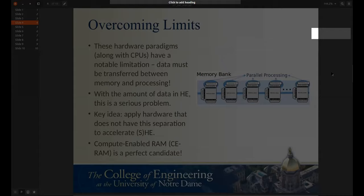All of these hardware paradigms that we mentioned, along with CPUs, have a common weakness: they have an inherent separation between memory and processing. For example, in an ordinary memory hierarchy, there's a separation of where data is stored in RAM or cache and where it's actually processed in the CPU. With the amount of data used in homomorphic encryption, this is a pretty serious problem, and a lot of prior research has been solely focused just around trying to reduce the latency required from data movement. The key idea for the collaboration between the hardware and cryptography groups at Notre Dame was to try and apply some special hardware that doesn't have this weakness to accelerate homomorphic encryption. It turns out that the hardware our nanotech collaborators are working on is a perfect candidate.